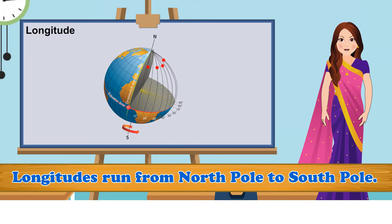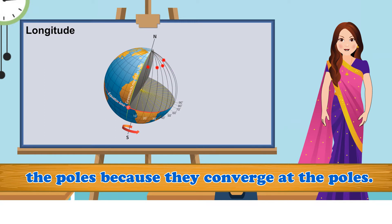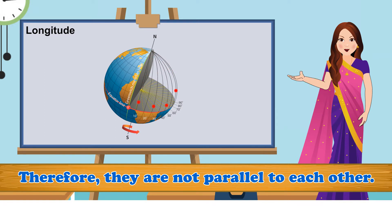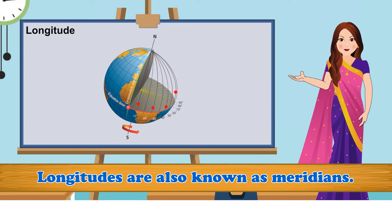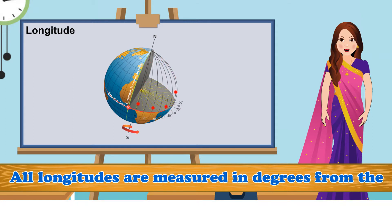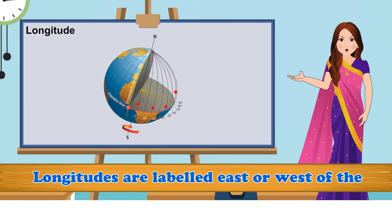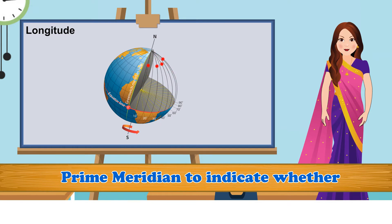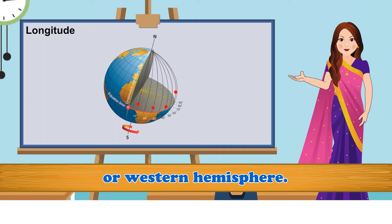Longitude: Longitudes run from the North Pole to the South Pole. Longitudes are closer to each other at the poles because they converge at the poles; therefore, they are not parallel to each other. Unlike latitudes, these lines do not form circles. Longitudes are also known as meridians. All longitudes are measured in degrees from the prime meridian, which is at zero degrees. Longitudes are labelled east or west of the prime meridian to indicate whether a place is located in the eastern or western hemisphere.